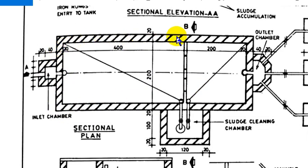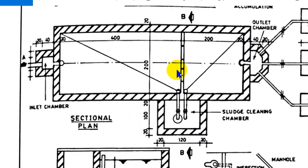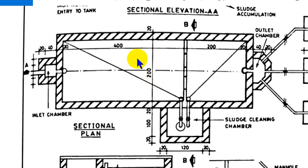This is the masonry wall. This is the chamber. This is the tank. This is the main chamber. This is the 2m inner view. This is the 6m total length.